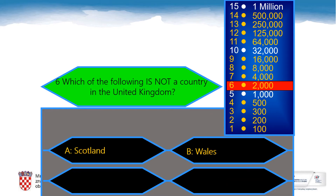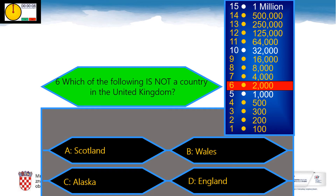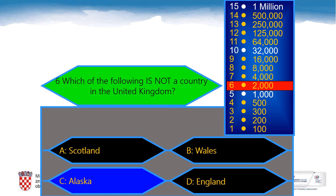Are you ready for the next question? Which of the following is not a country in the United Kingdom? A: Scotland, B: Wales, C: Alaska, D: England. And the correct answer is Alaska, of course. It is a state in the United States.